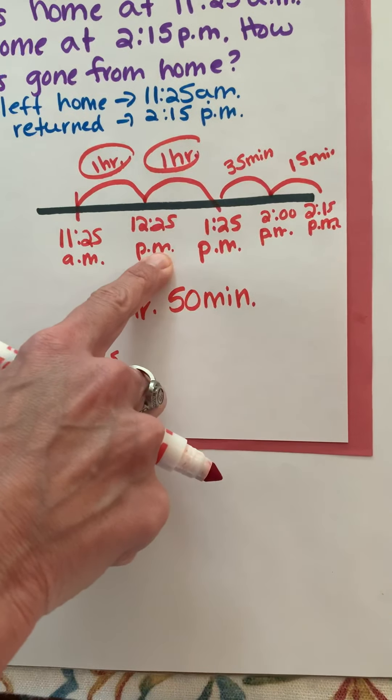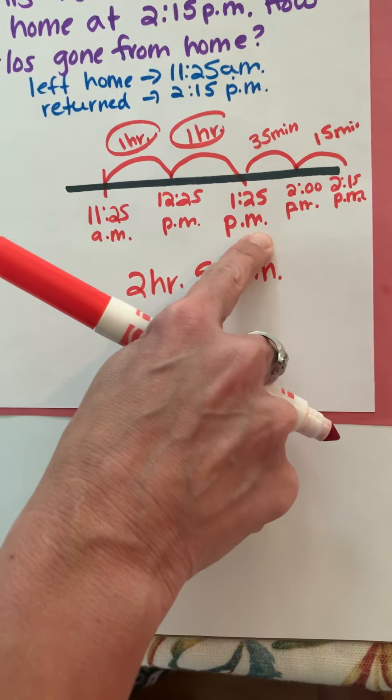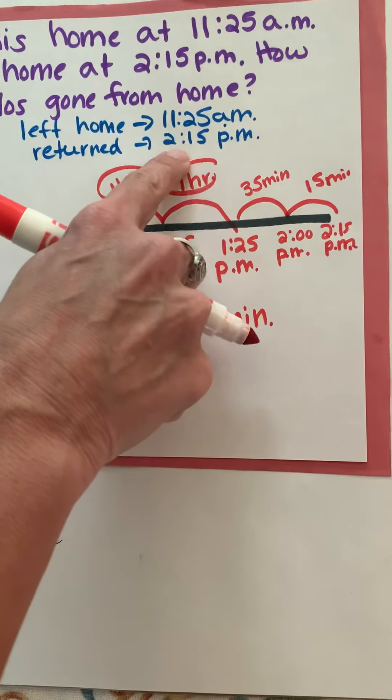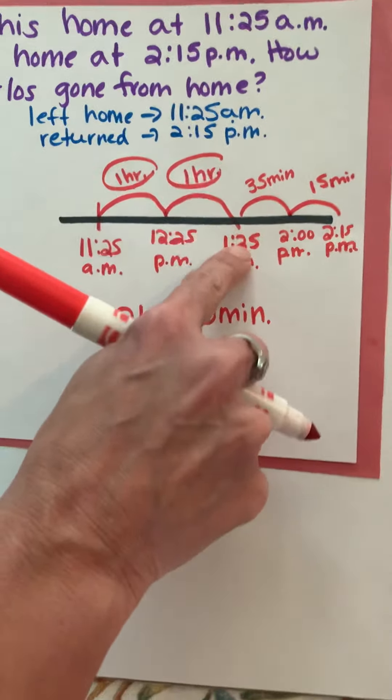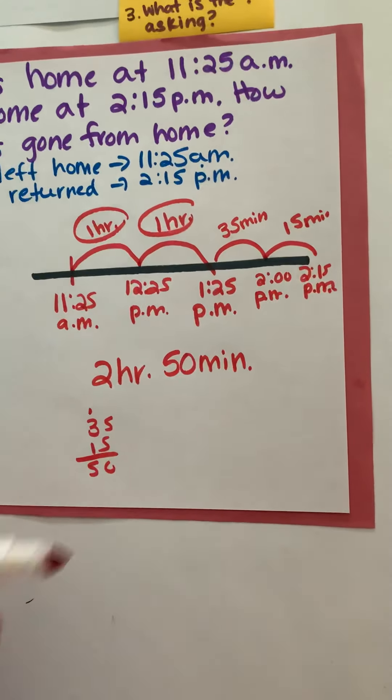I was at 11:25, I jumped an hour to 12:25, made sure I changed from a.m. to p.m. I jumped another hour to 1:25, realized I could not jump another hour to 2:25 because that would take me past 2:15. So I jumped to two o'clock that's 35 minutes, from 2 to 2:15, 15 minutes. I add up my hours and I add up my minutes.